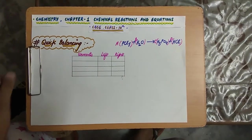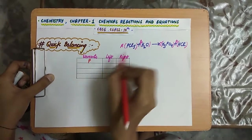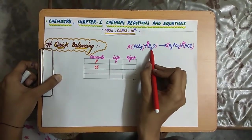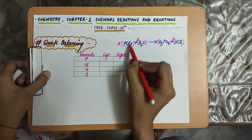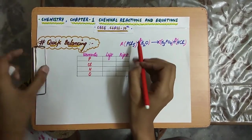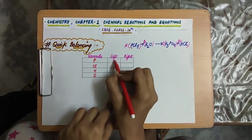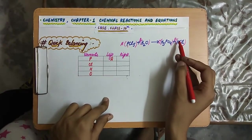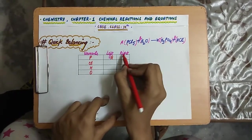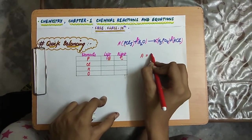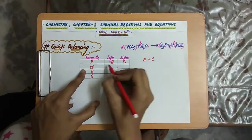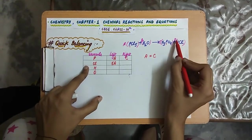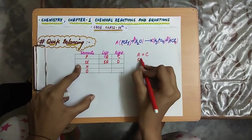In the equation, we have 4 elements: P (phosphorus), Cl (chloride), H (hydrogen), and O (oxygen). On the left side, the number of atoms of P is A (since PCl₅ has 1 phosphorus, so 1 × A = A). On the right side, it is C × 1 = C. So this indicates A = C. For Cl, on the left it is 5A, and on the right it is D (since HCl has 1 chlorine, so 1 × D = D). So 5A = D.